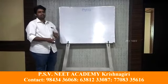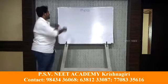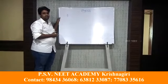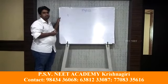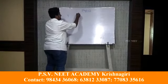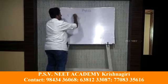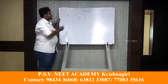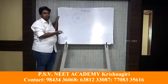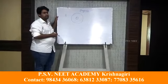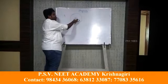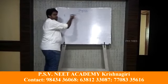Bohr had three postulates about the atom. The first one is that the electrostatic attraction between the nucleus and the electrons will be the cause for the circular motion of the electron. The nucleus is at the center and the electrons rotate around it in circular motion. Whenever there is circular motion, a centrifugal force acts, and that centrifugal force is provided by the electrostatic attraction between the positively charged nucleus and the negatively charged electron.